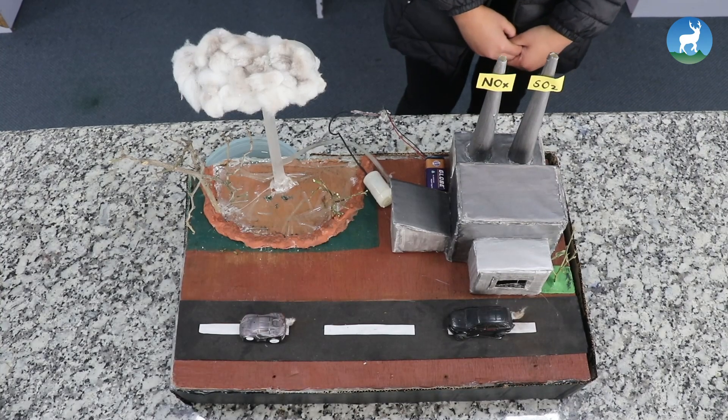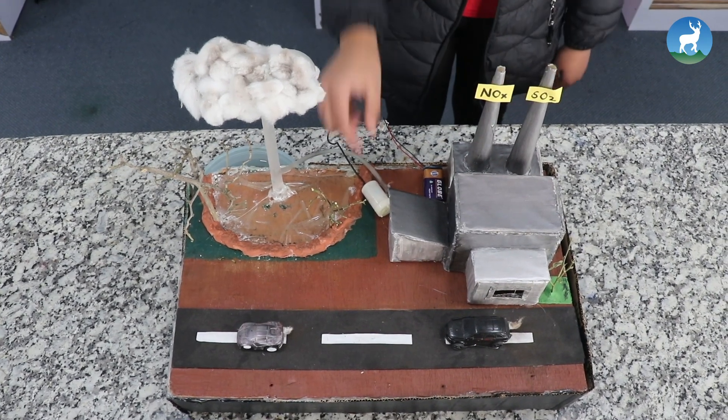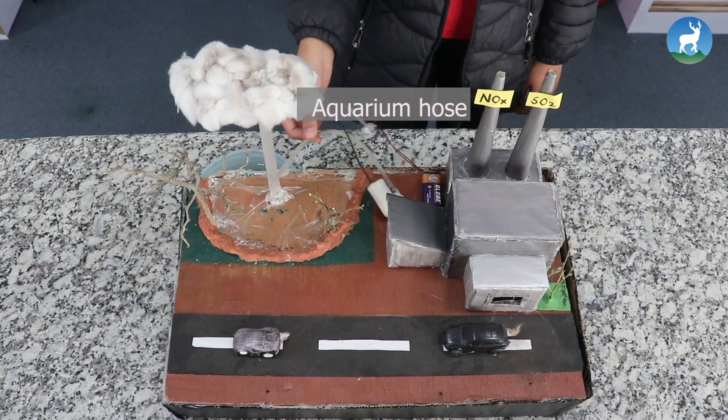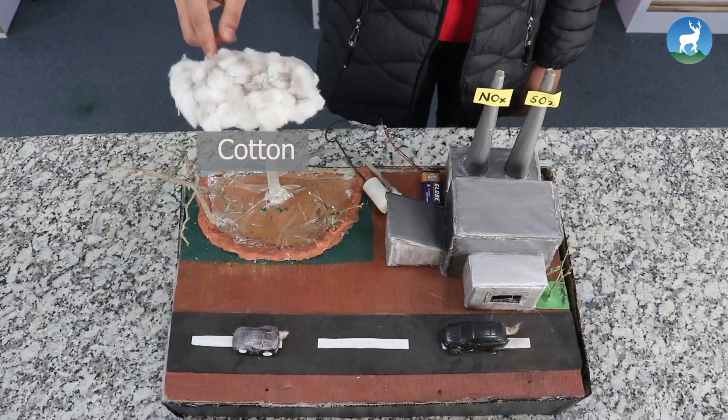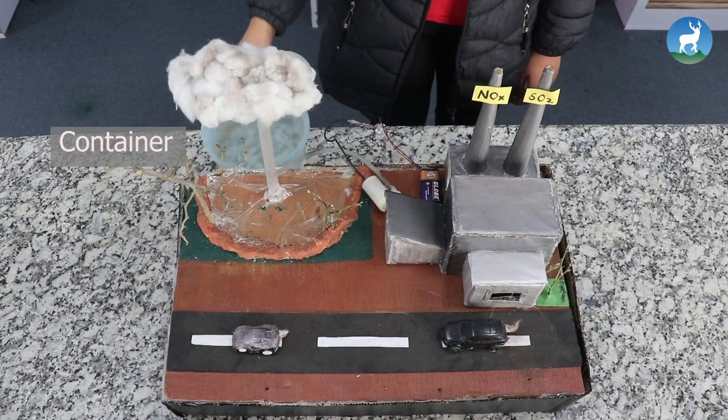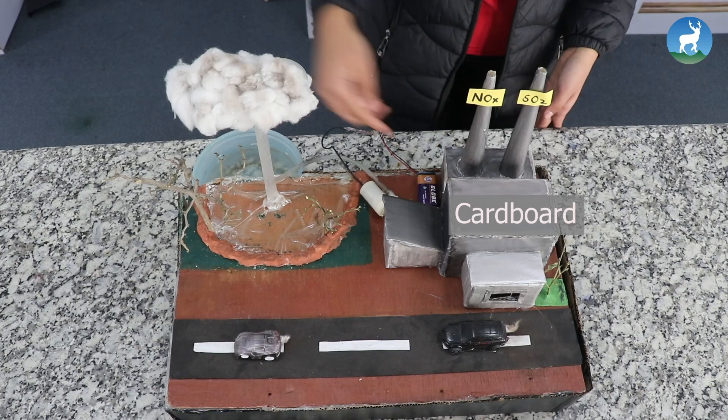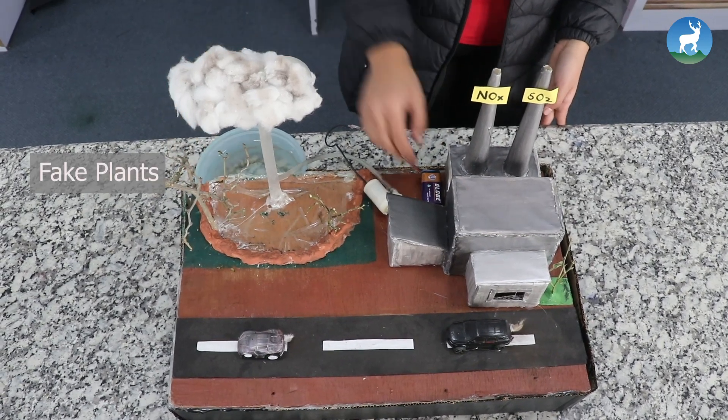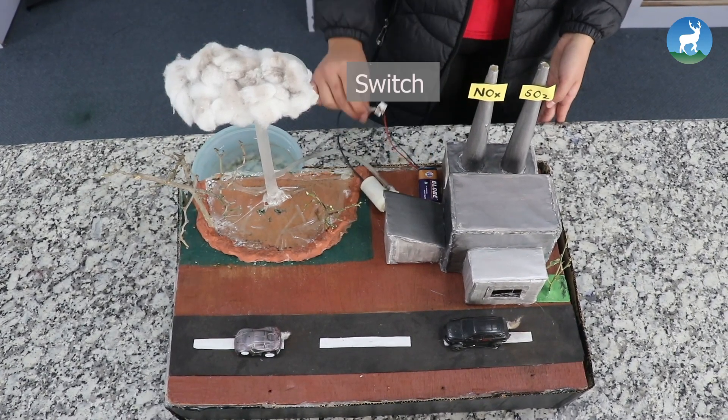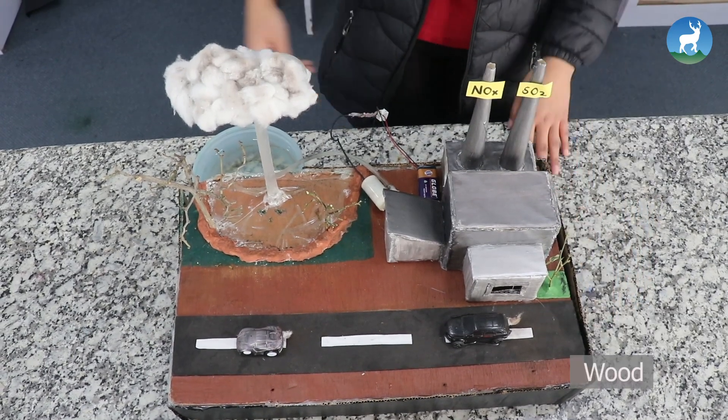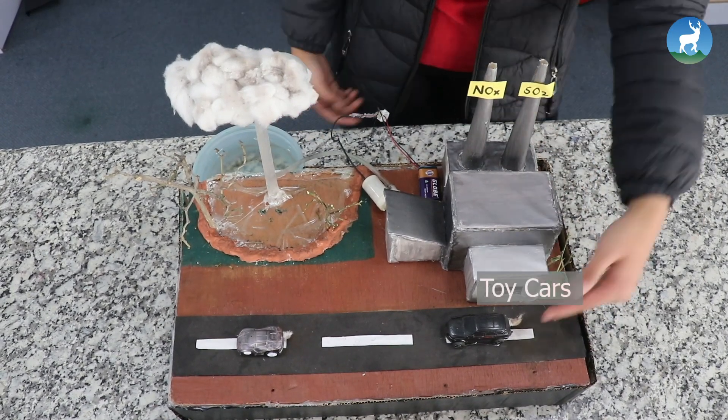The materials required for this project are water pump, aquarium hose, cotton, a container, clay, cardboard, fake plants, battery, switch, chart paper, wood, and toy cars.